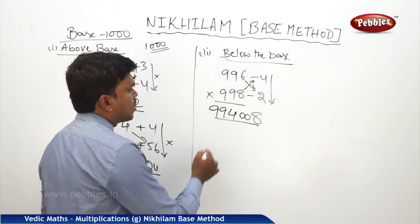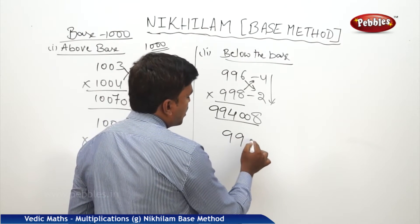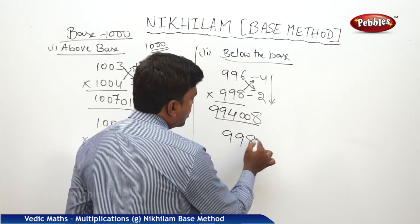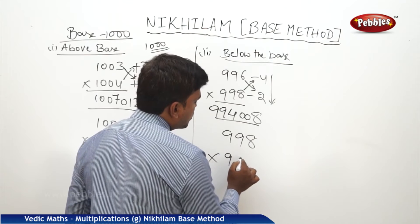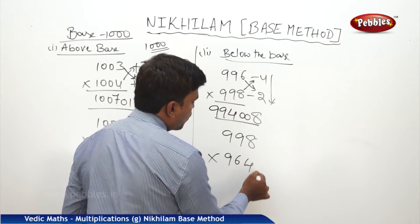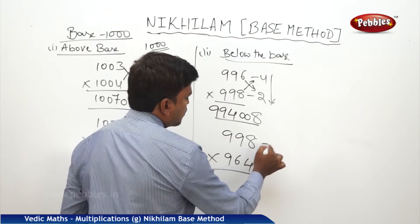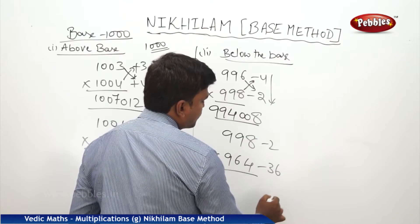So 994, 008. Similarly, one more example: 998 into 964. This is minus 2 and this is minus 36.